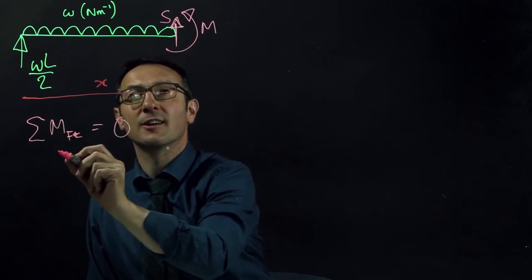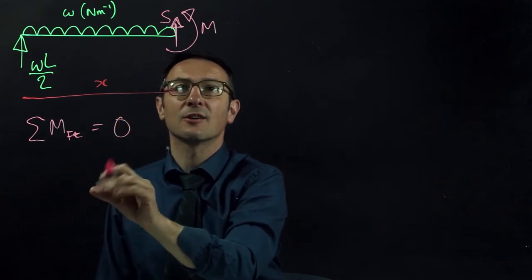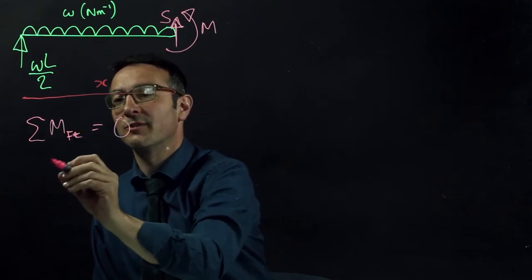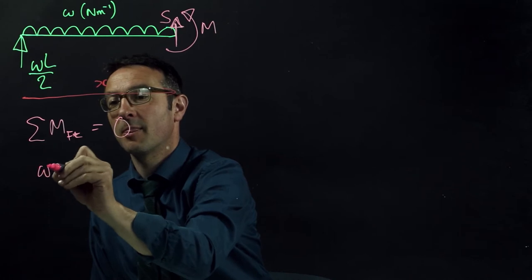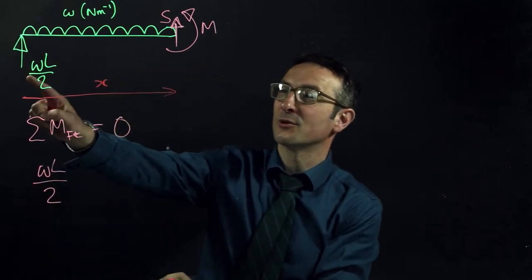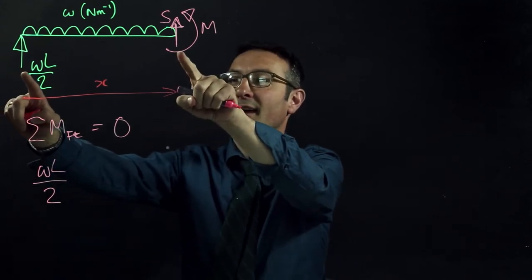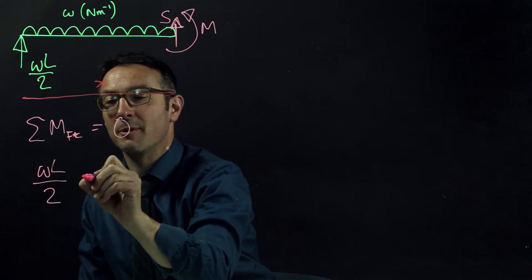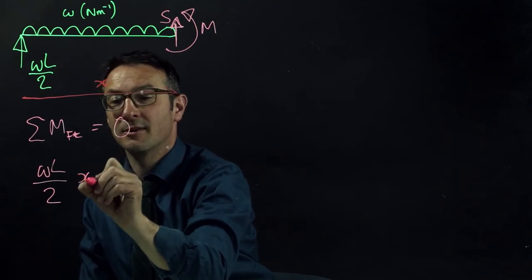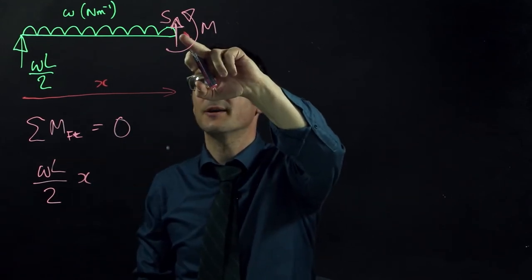Well, in no particular order, let's put anti-clockwise on one side and clockwise on the other side. We've got a WL over 2, this force at the end, its lever arm about the point we're looking at is x, so that causes a moment of WL over 2 times x, that's a clockwise moment about this point here.